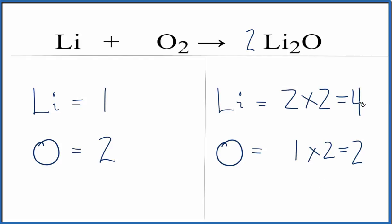So we fixed our oxygens. Now we have four lithiums here and one here. But that's not a problem because we can put a coefficient of four in front of the Li here, in front of the lithium atom. One times four. That equals four.